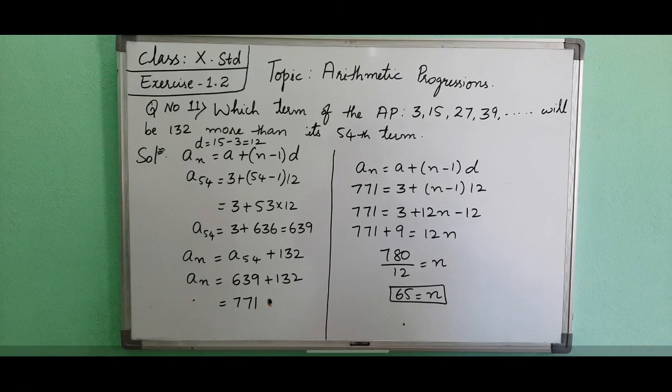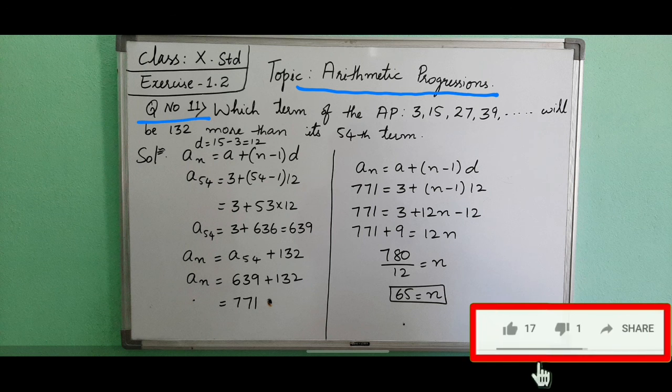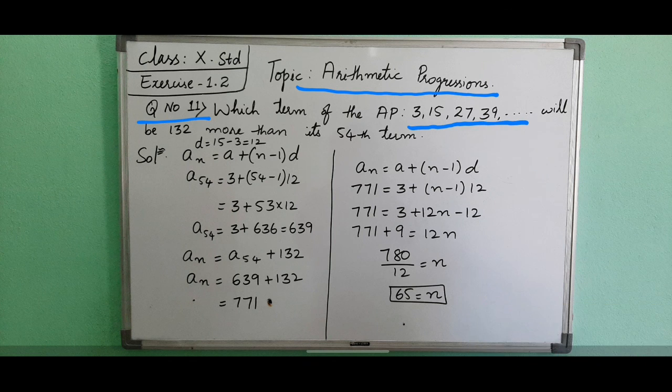Hello everyone. Now, Arithmetic Progression, Exercise 1.2, question number 11: which term of the AP 3, 15, 27, 39, and so on will be 132 more than its 54th term? Again, it is more means it is extra. What the answer is for the 54th term, that will be more - in that you have to add 132, then it will become one more term of that AP.